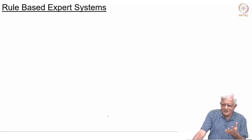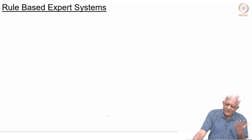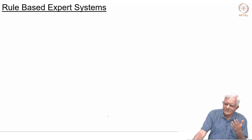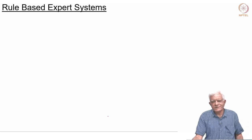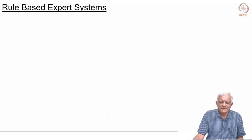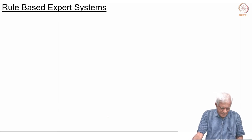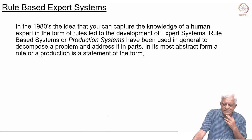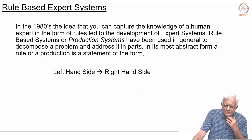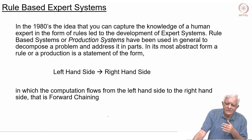They called them expert systems because the rules were extracted from experts, and the hope was that the program they built would perform like a human expert. In some cases this was successful; in others it was not, because it was difficult to extract the rules people were using implicitly. Nevertheless, it was a very successful phase of application.